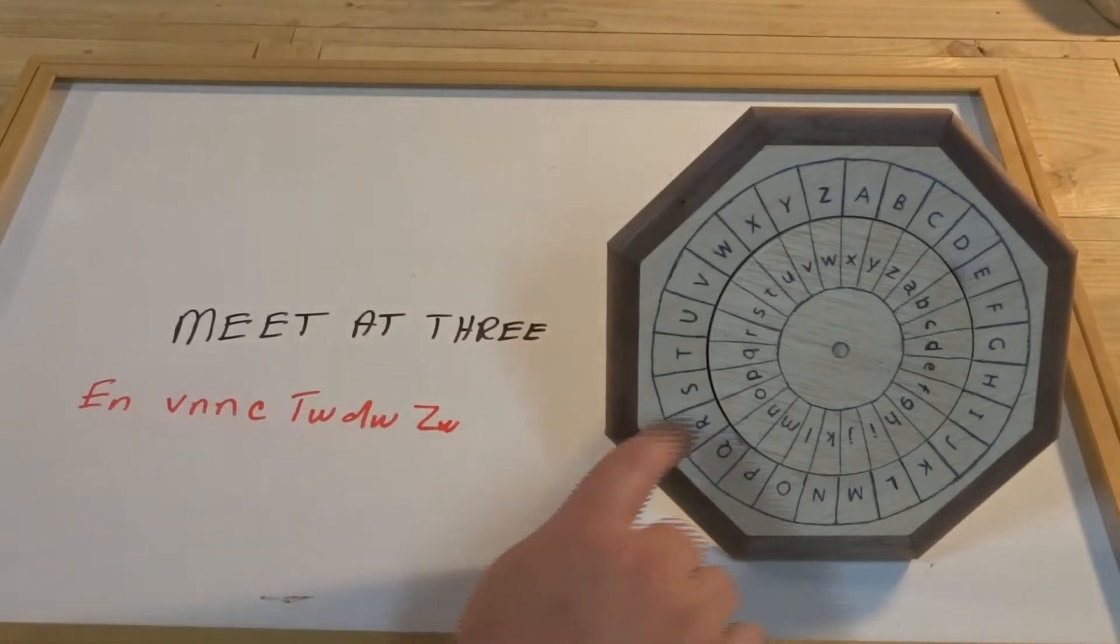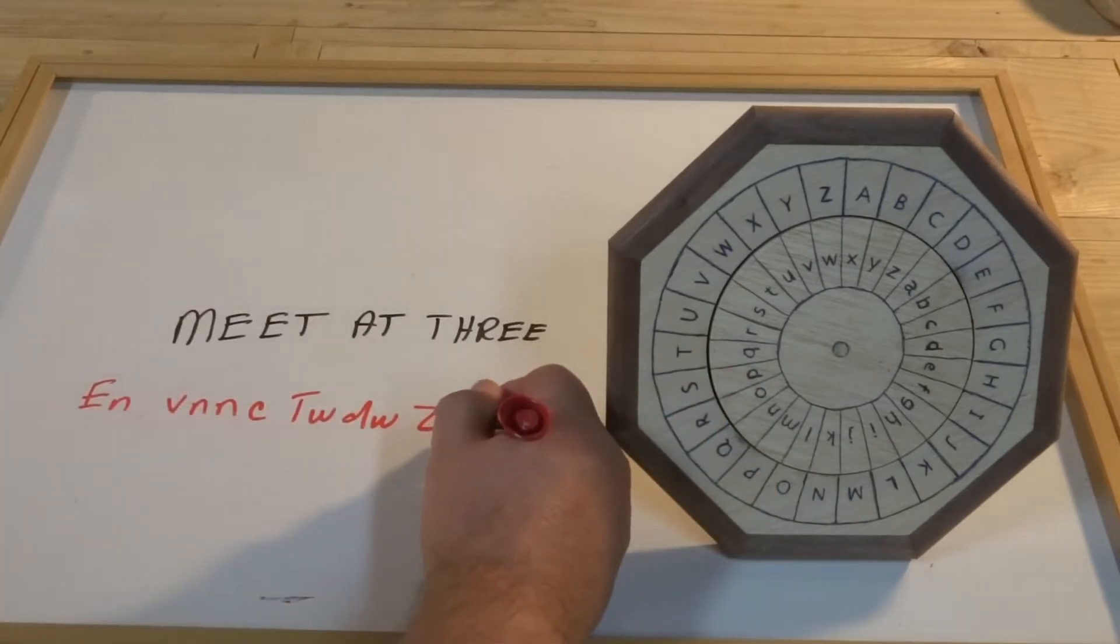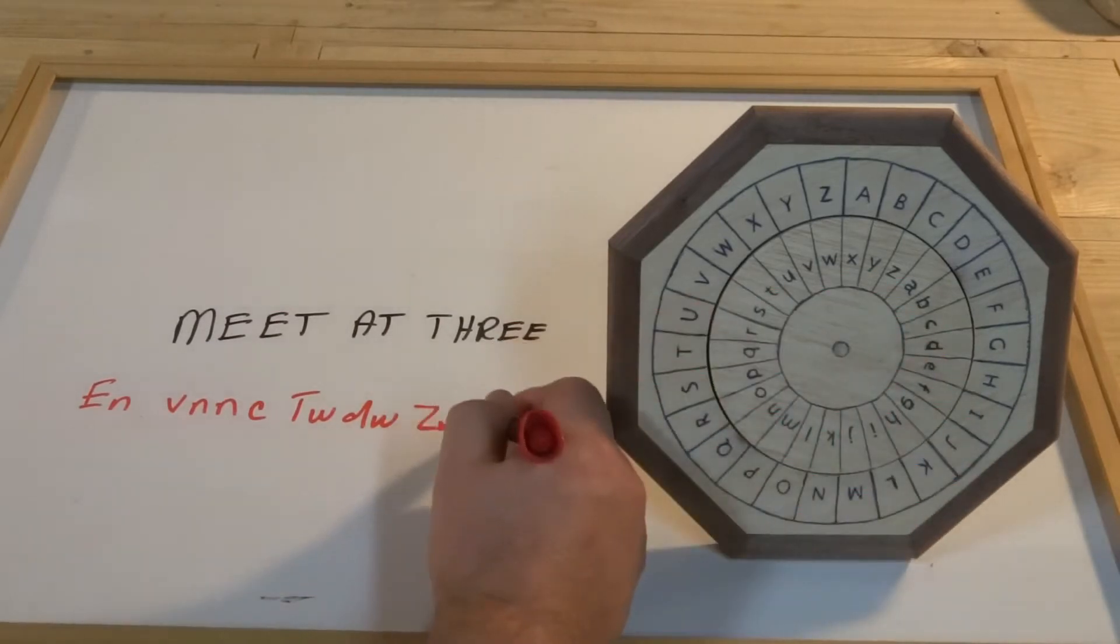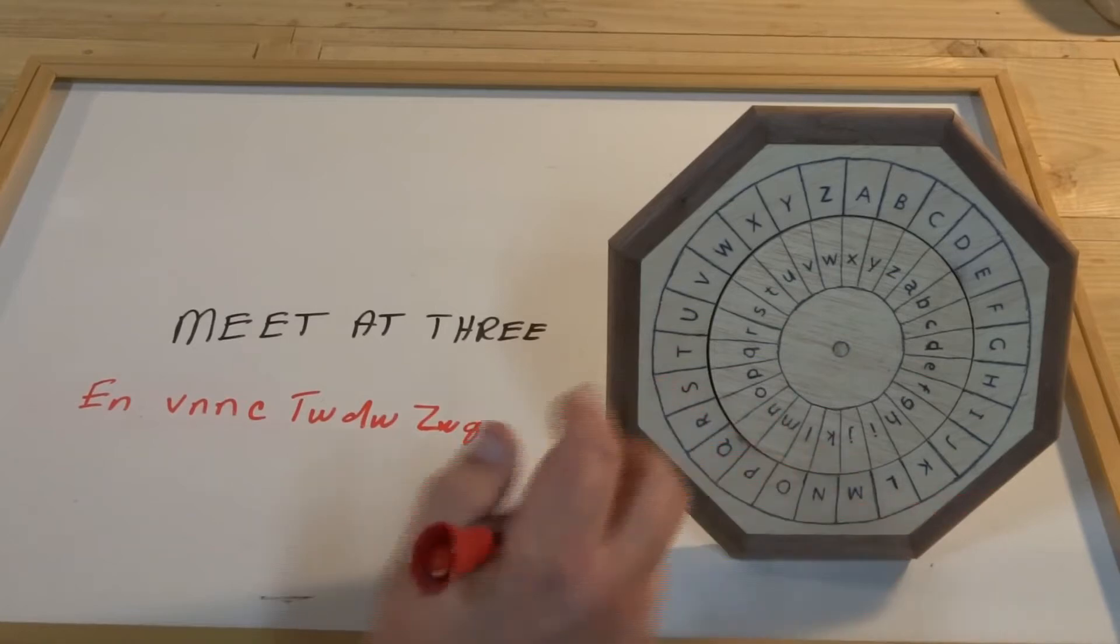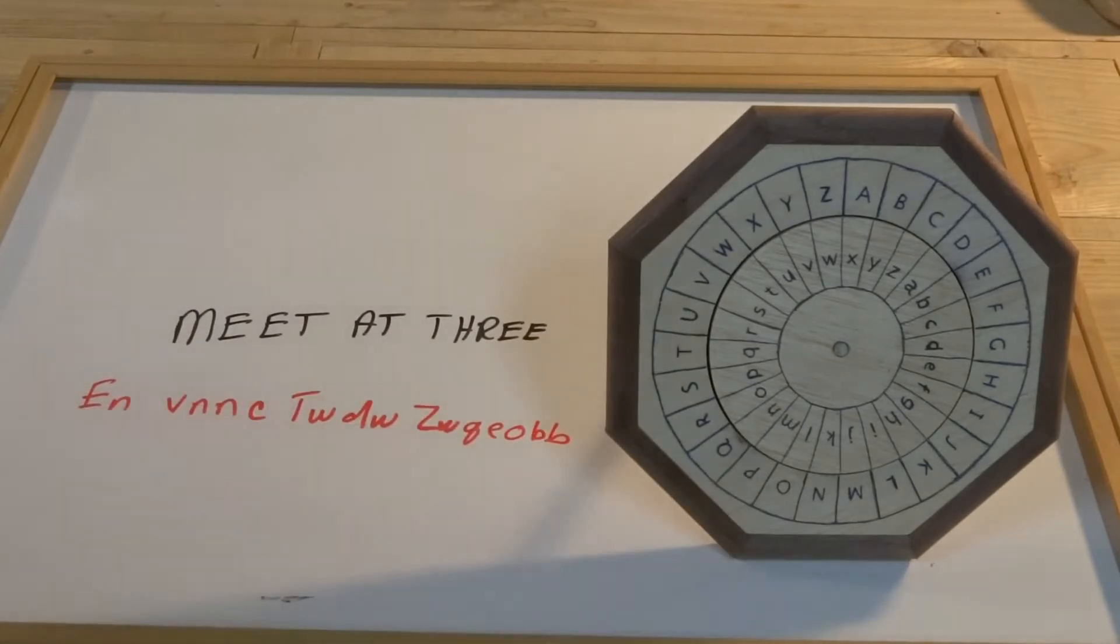And then we start encoding our letters. T is Q, H is E, R, where's R? Here it is, it's O. And then finally, the E is B. Write down two of those. And we have a new message.